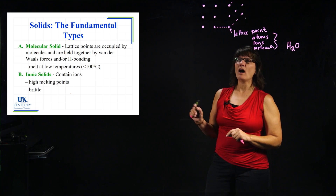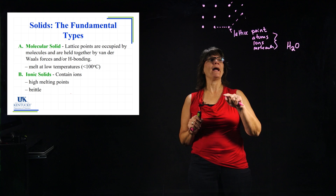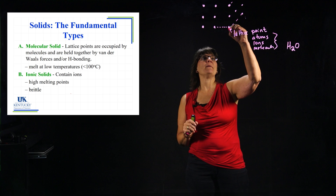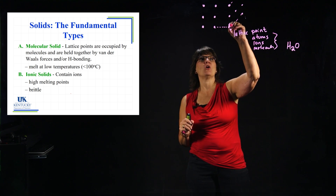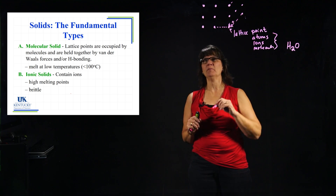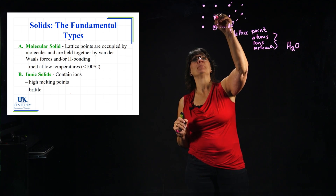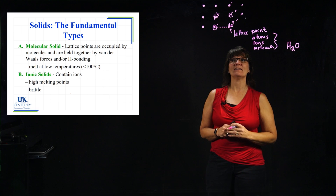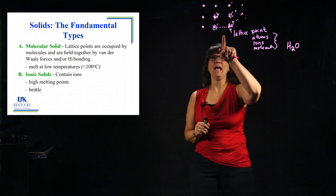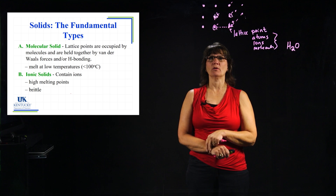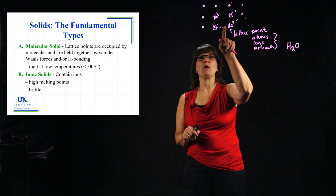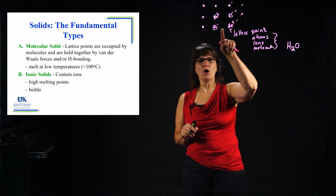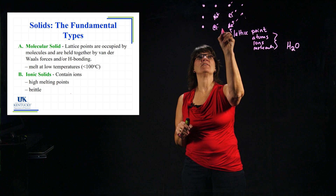The next type of solid is an ionic solid. In an ionic solid we have ions at the lattice points — so we've got maybe a sodium ion, Na⁺ here, and Cl⁻ here, alternating. The attractions are strong between a cation and an anion — it is not a weak intermolecular attraction. It is a strong ionic bond that is holding these together.